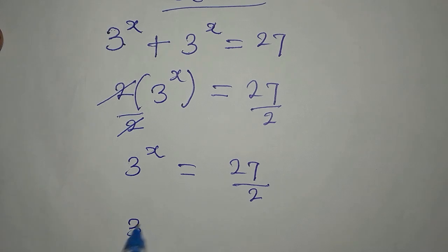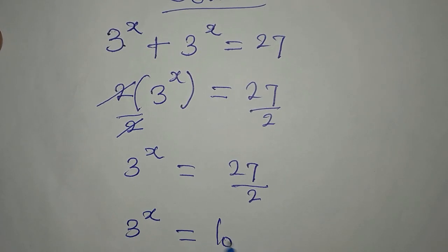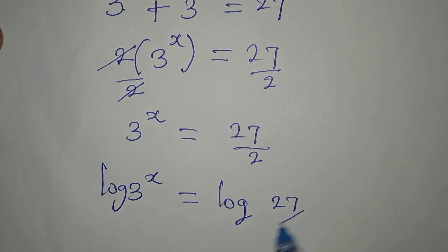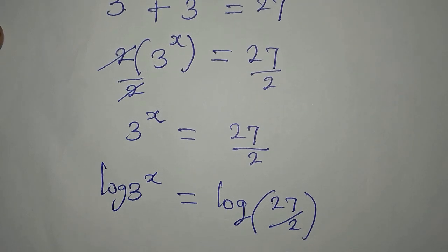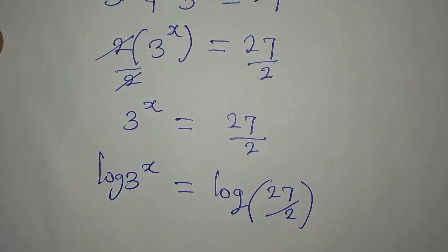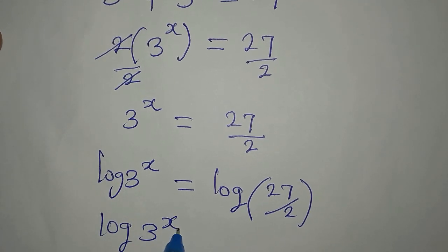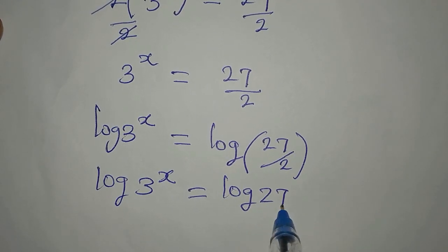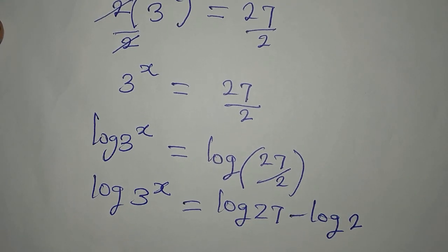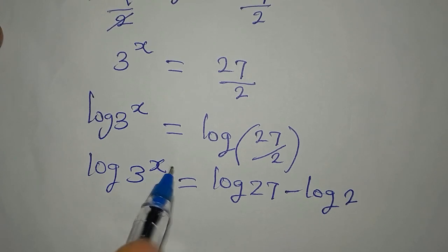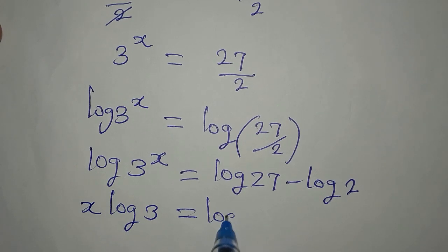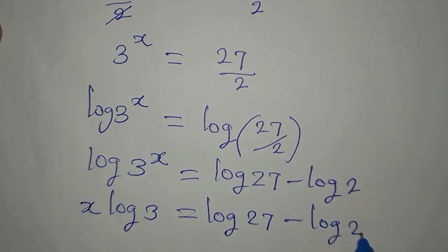Taking the log of both sides: log of 3 to the power of x equals log of 27 divided by 2. I will apply one of the laws of logarithms — log of 27 divided by 2 becomes log 27 minus log 2, because of the division. Then the power can come down in front, so we have x·log 3 equals log 27 minus log 2.